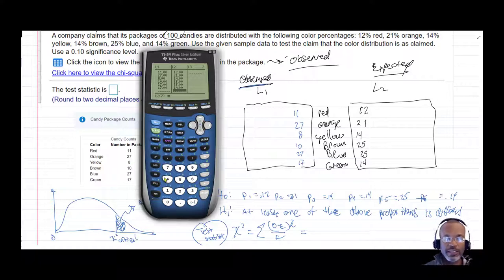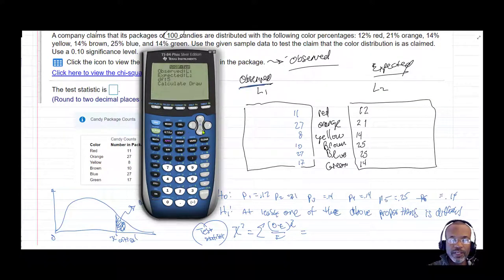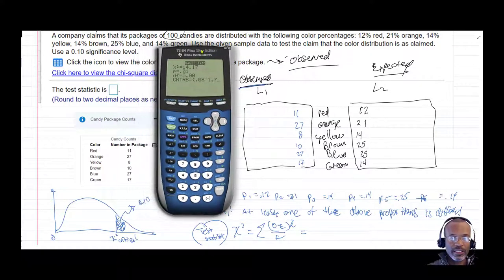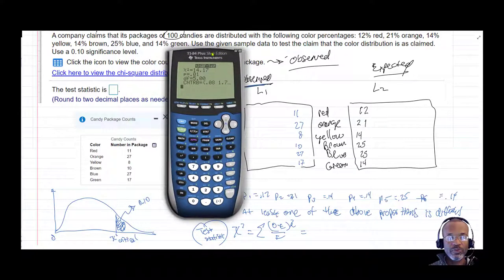So plugging these values observed and expected as list one and list two. We have that entered into our calculator. Let's go ahead and run the test. So we're going to go to stats, move over to tests, and drop down to chi-square goodness of fit. We have list one, list two, and then degrees of freedom will be the number of categories, red, orange, yellow, brown, blue, green, minus one. So that's going to be six minus one or five. And we're going to calculate, and we come up with a test statistic of 14.17. And we also get a p-value of 0.01.